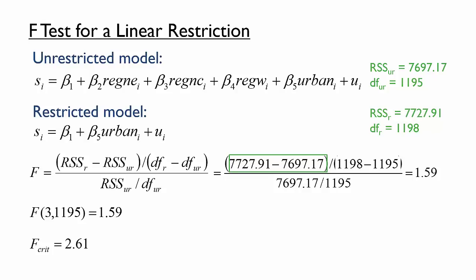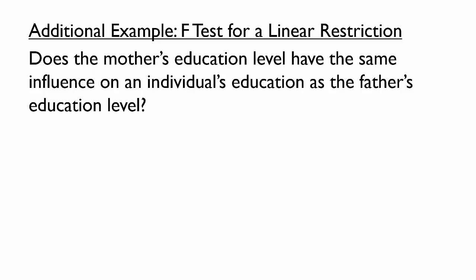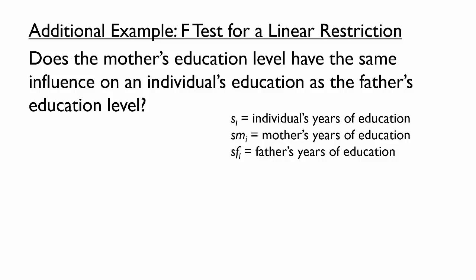Let's try addressing a different question using an F-test on a restriction. Does the mother's education level have the same influence on an individual's education as the father's education level? Think about how we could answer this question using the NLSY dataset. We will need variables for an individual's years of education as well as those of the mother and the father. If Beta-2 equals Beta-3, then a one-year increase in the mother's education has the same effect on the individual's education as a one-year increase in the father's education. So this null hypothesis corresponds to a yes answer to the question.